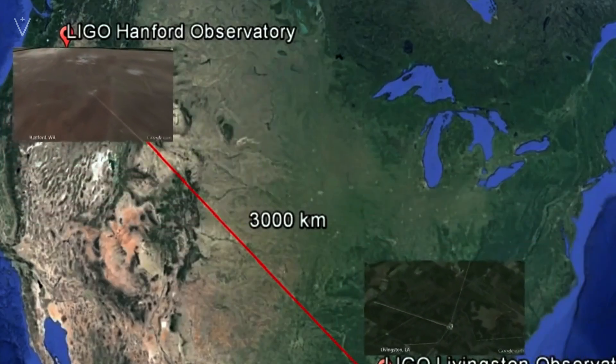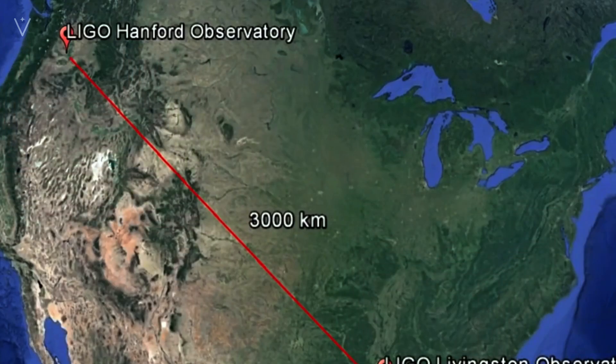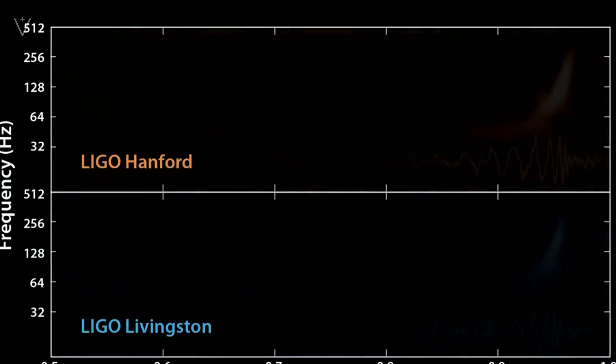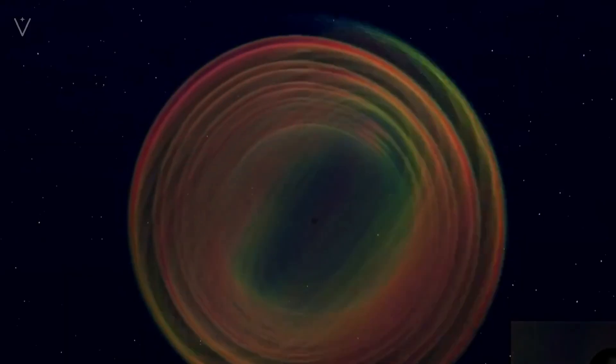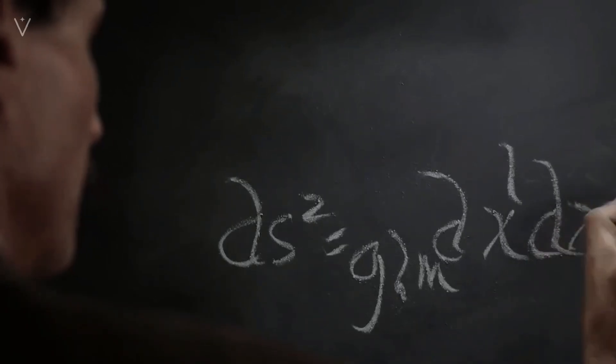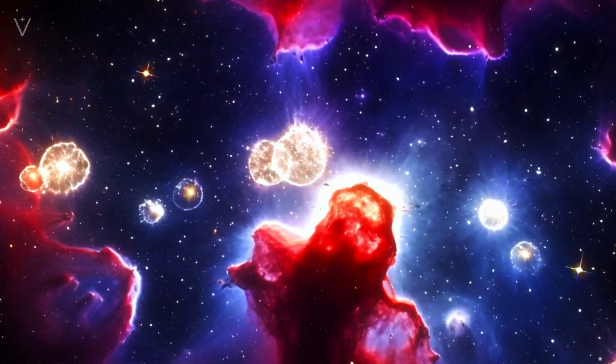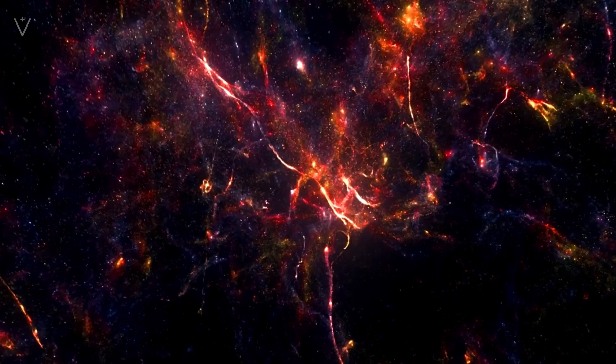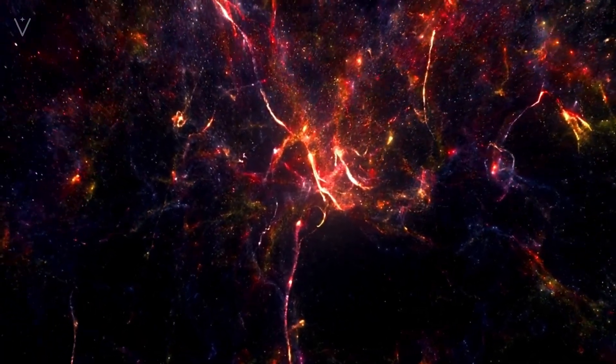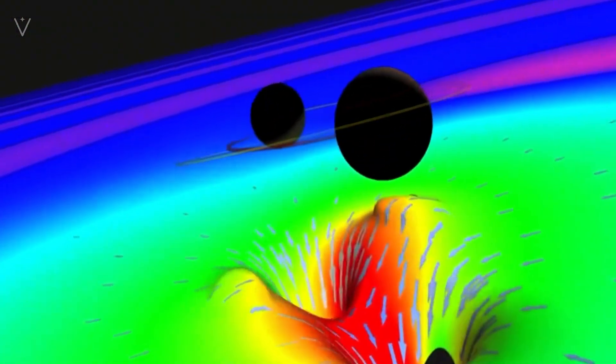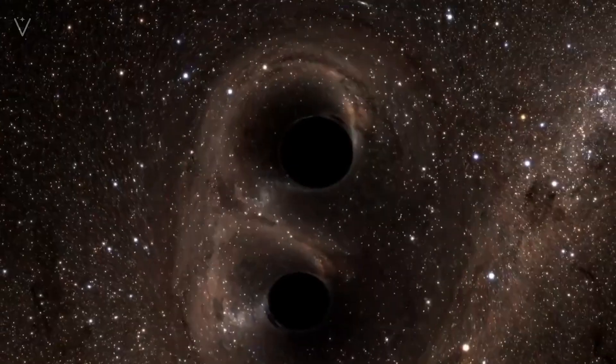As early as 1916, Einstein predicted the existence of gravitational waves based on the general theory of relativity. According to the general theory of relativity, gravitational waves are considered to be an effect of the curvature of space-time. This curvature is caused by the existence of mass. The greater the mass, the greater the curvature of space-time.